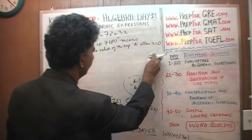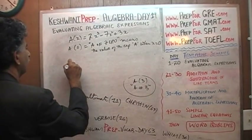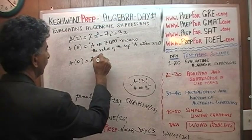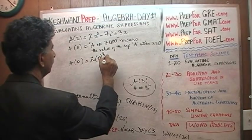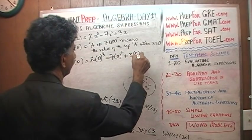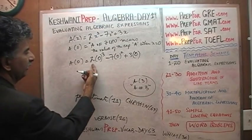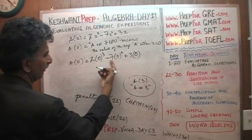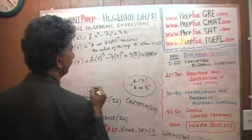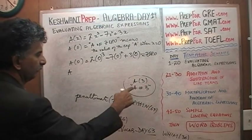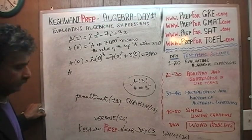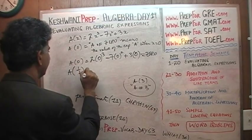Let's find A of 0. We take our expression and replace x with zero: 2(0³) minus 7(0²) plus 3(0). Of course this is going to be zero, because zero times 2 is zero, zero times 7 is zero, zero times 3 is zero — the whole thing is zero. That's very easy. It is zero. Let's move on to the next part.